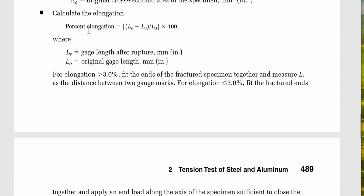Calculate the percent elongation: % elongation = (L_S − L₀) / L₀ × 100%, where L_S is the gauge length after rupture in mm and L₀ is the original gauge length in mm. For elongation larger than three percent, fit the ends of the fractured specimen together and measure L_S as the distance between the two gauge marks.